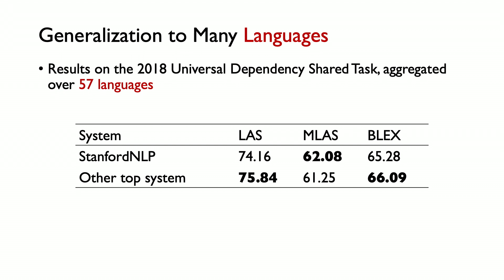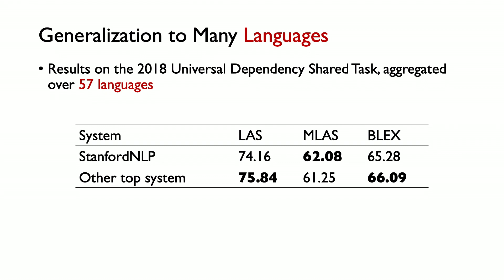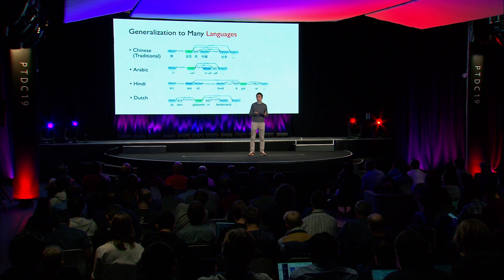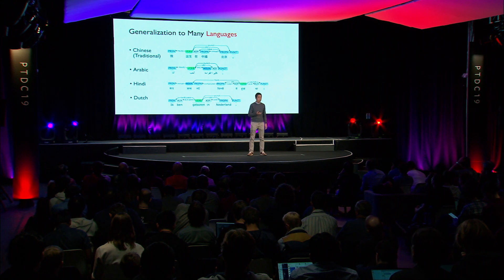So how does this pipeline with neural networks work? A major advantage of our library is that all the underlying architectures are human-language agnostic, which means they naturally generalize to all different kinds of human languages. To demonstrate this, we trained and ran our system on a dataset of 57 languages from the 2018 Universal Dependency Shared Task, and it achieves very competitive scores compared to the top systems. Here it shows how our system can be run on different languages to produce syntactic annotations following the Universal Dependency schema.